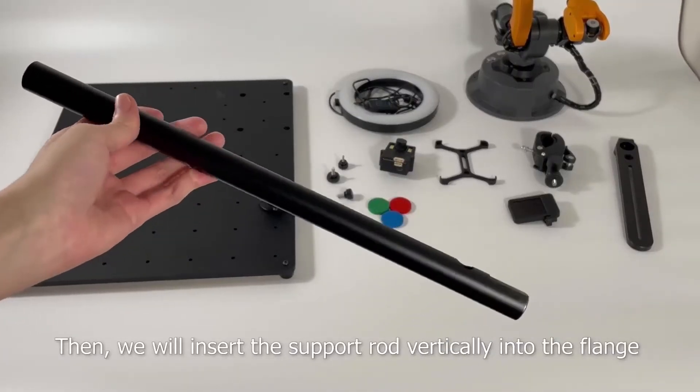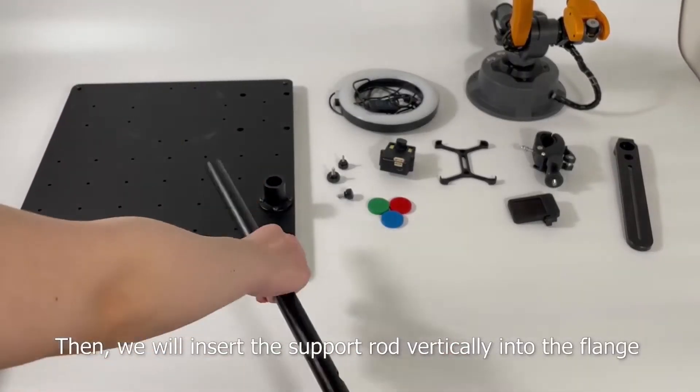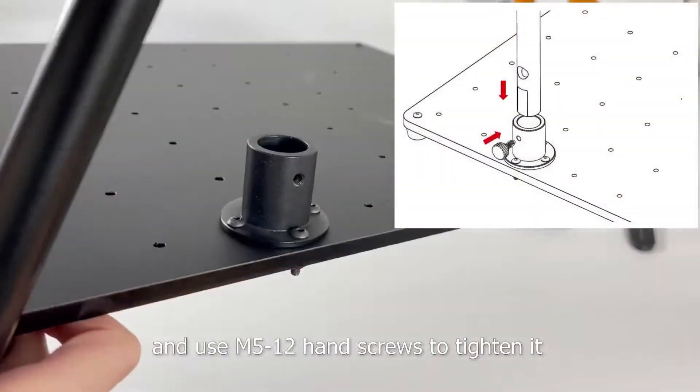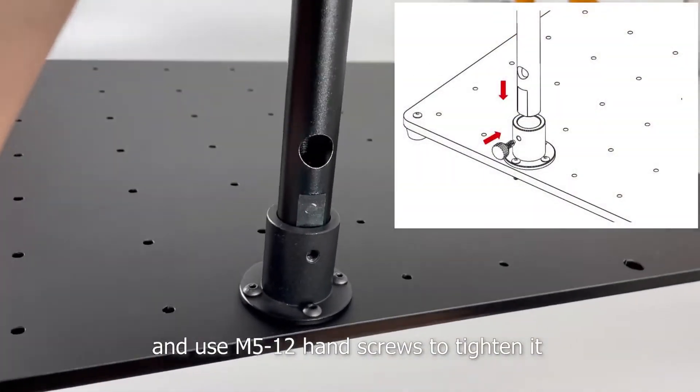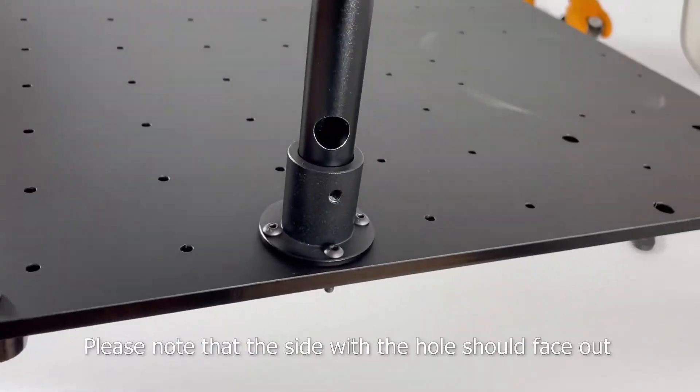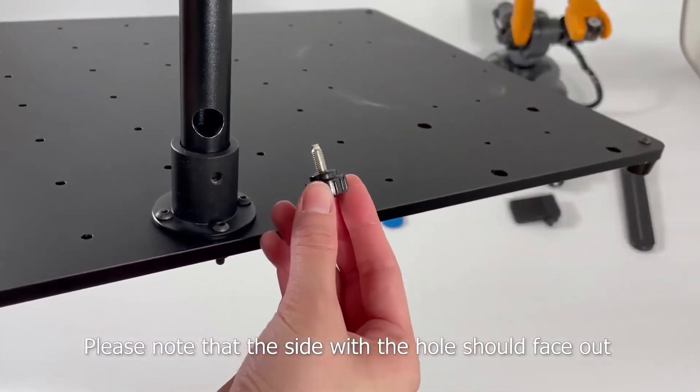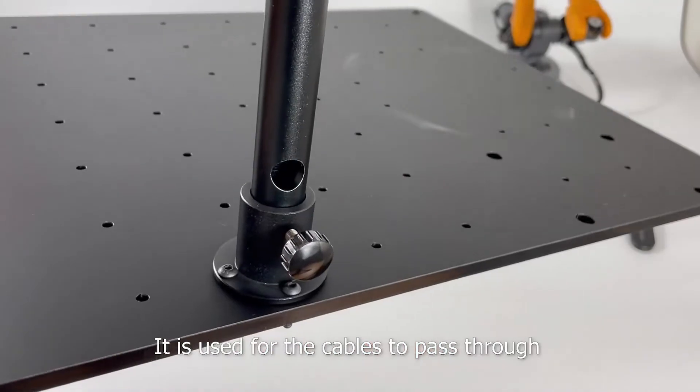Then, we will insert the support rod vertically into the flange and use M512 hand screws to tighten it. Please note that the side with the hole should face out. It is used for the cables to pass through.